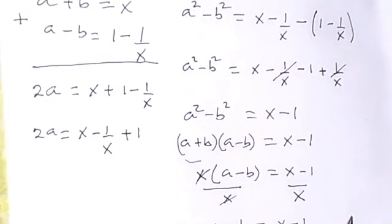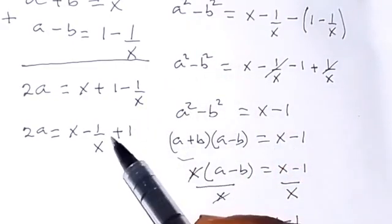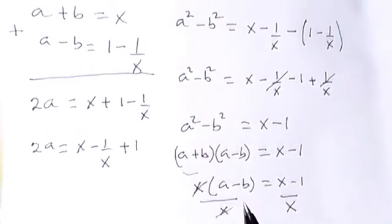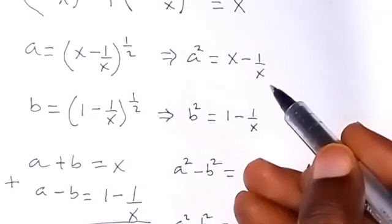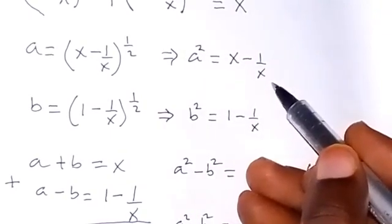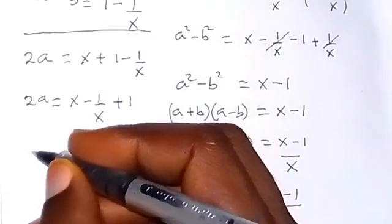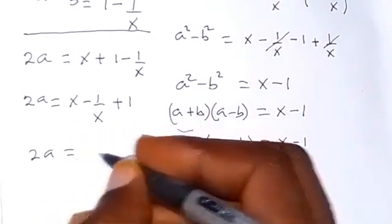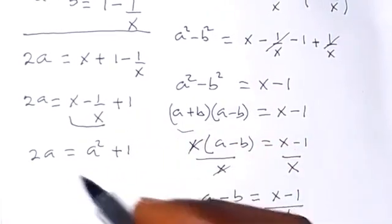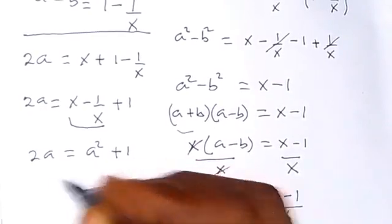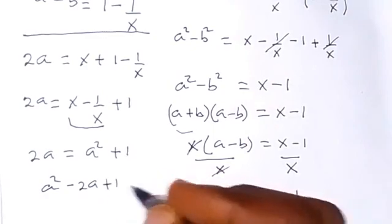We can replace x minus 1/x with A squared, since A squared equals x minus 1/x. So we have 2A equals A squared plus 1. Taking 2A to the other side gives us A squared minus 2A plus 1 equals 0.